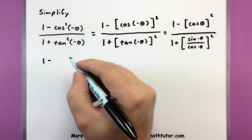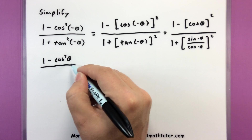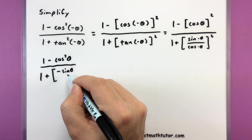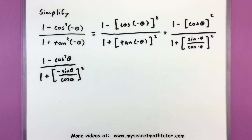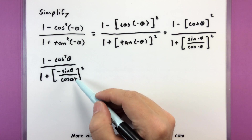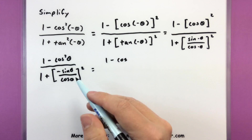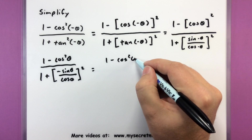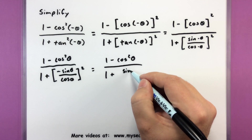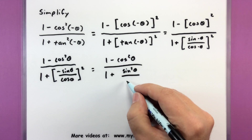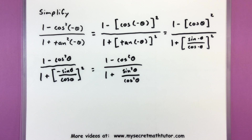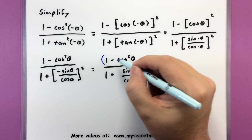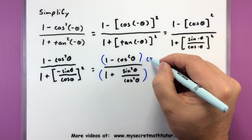So now I have 1 minus cosine squared of theta all over 1 plus the quantity negative sine of theta over cosine of theta. Continuing on, I can apply the squared to the top and to the bottom. When I apply it to negative sine of theta, negative sine times negative sine is positive sine squared. So the denominator becomes 1 plus sine squared of theta over cosine squared of theta. Now everything is written in terms of sine and cosine, but I have fractions inside of my fraction. To better simplify, let's go ahead and multiply the top and the bottom by our common denominator of cosine squared theta.